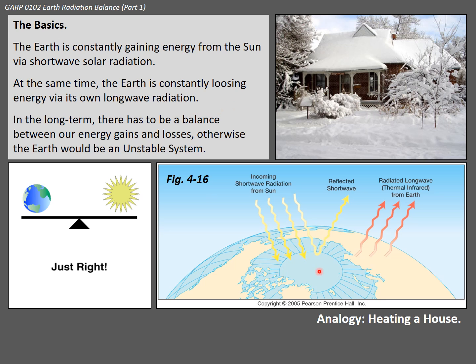Heat from the Sun comes in, shown here as these four squiggly yellow arrows. And then here we have our cooling mechanism — the electromagnetic radiation emitted by the Earth and the reflected solar radiation. Let's look at this in more detail.